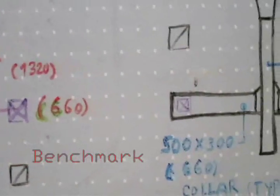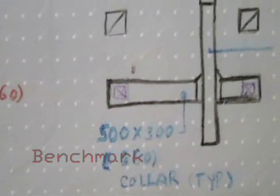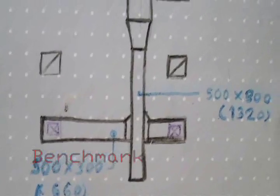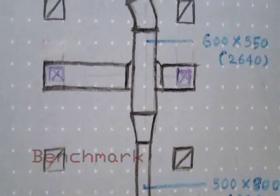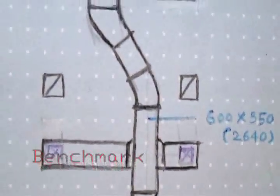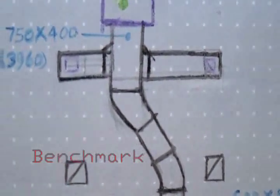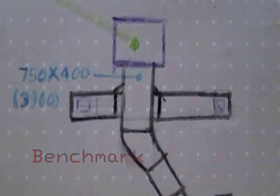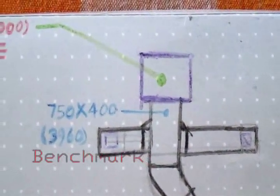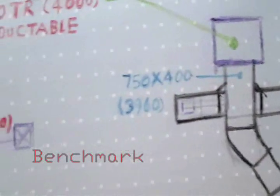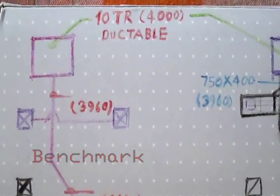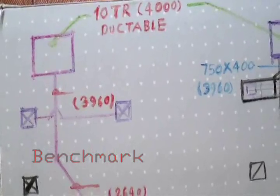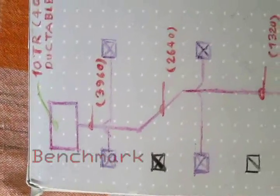This is the ducting drawing — double line ducting — and there is also a single line ducting shown. You can see the sizes mentioned with the CFM in brackets. The CFM values are noted in brackets and the sizes are in millimeters. This is how we will start with the single line ducting.